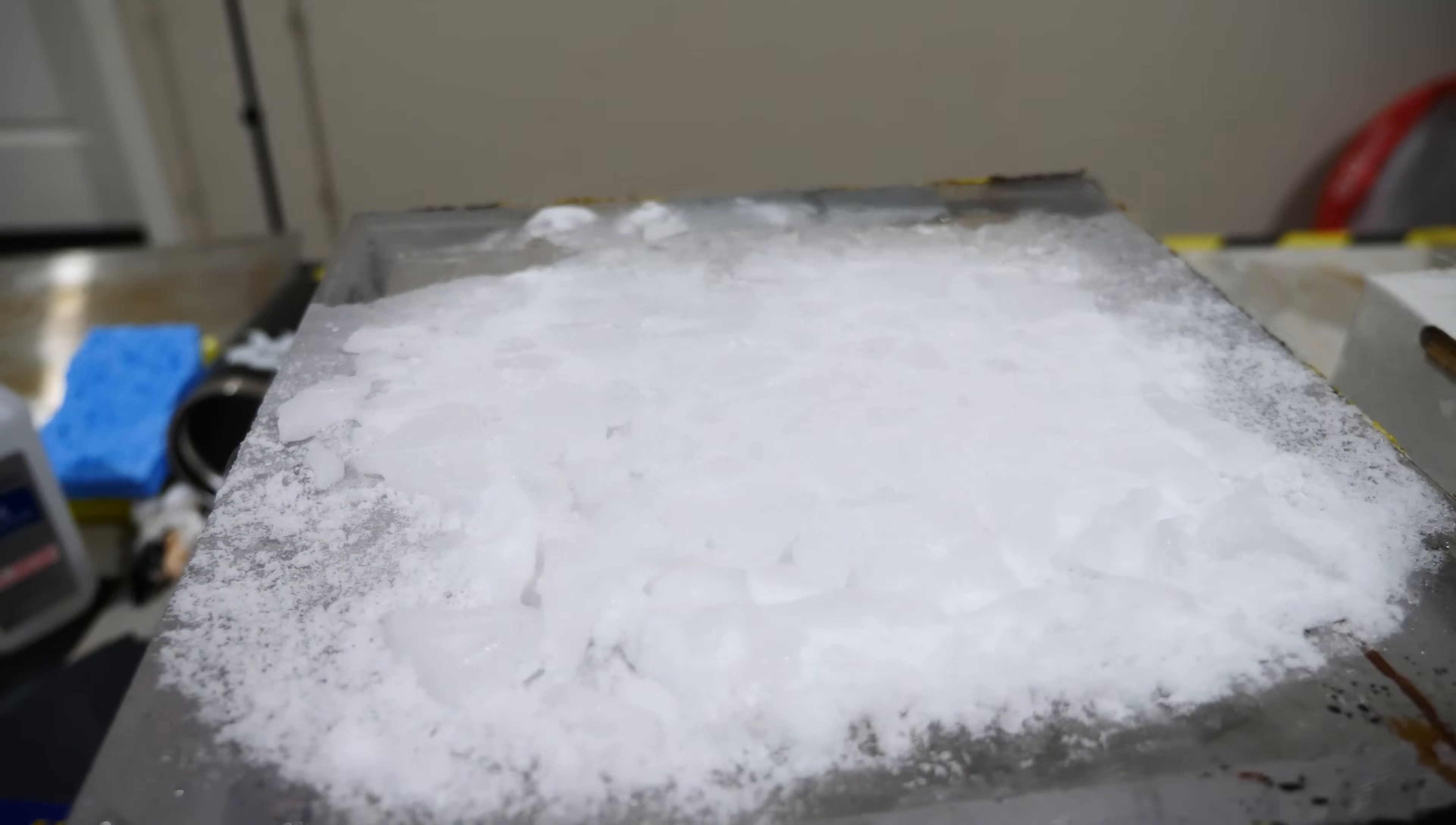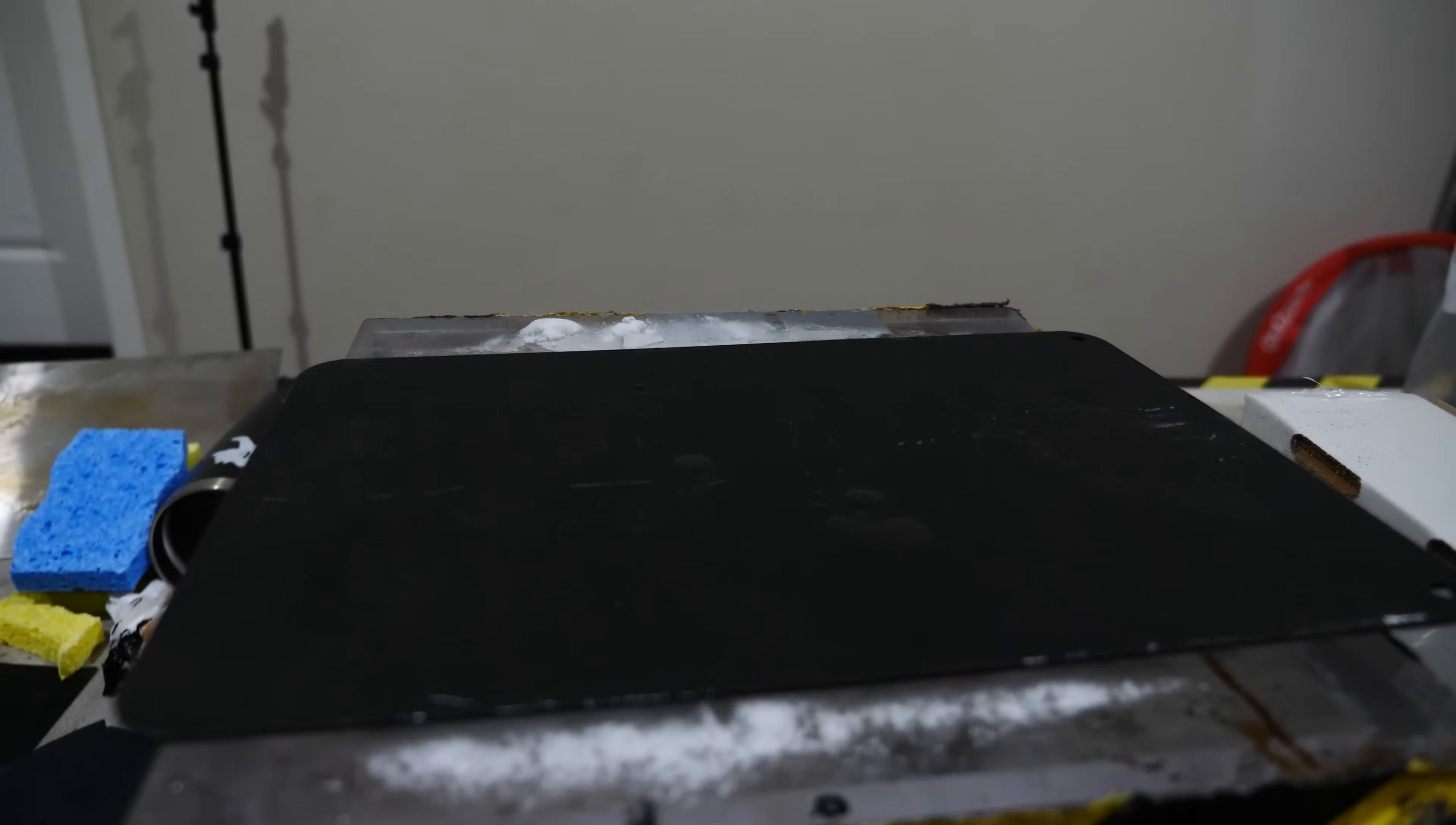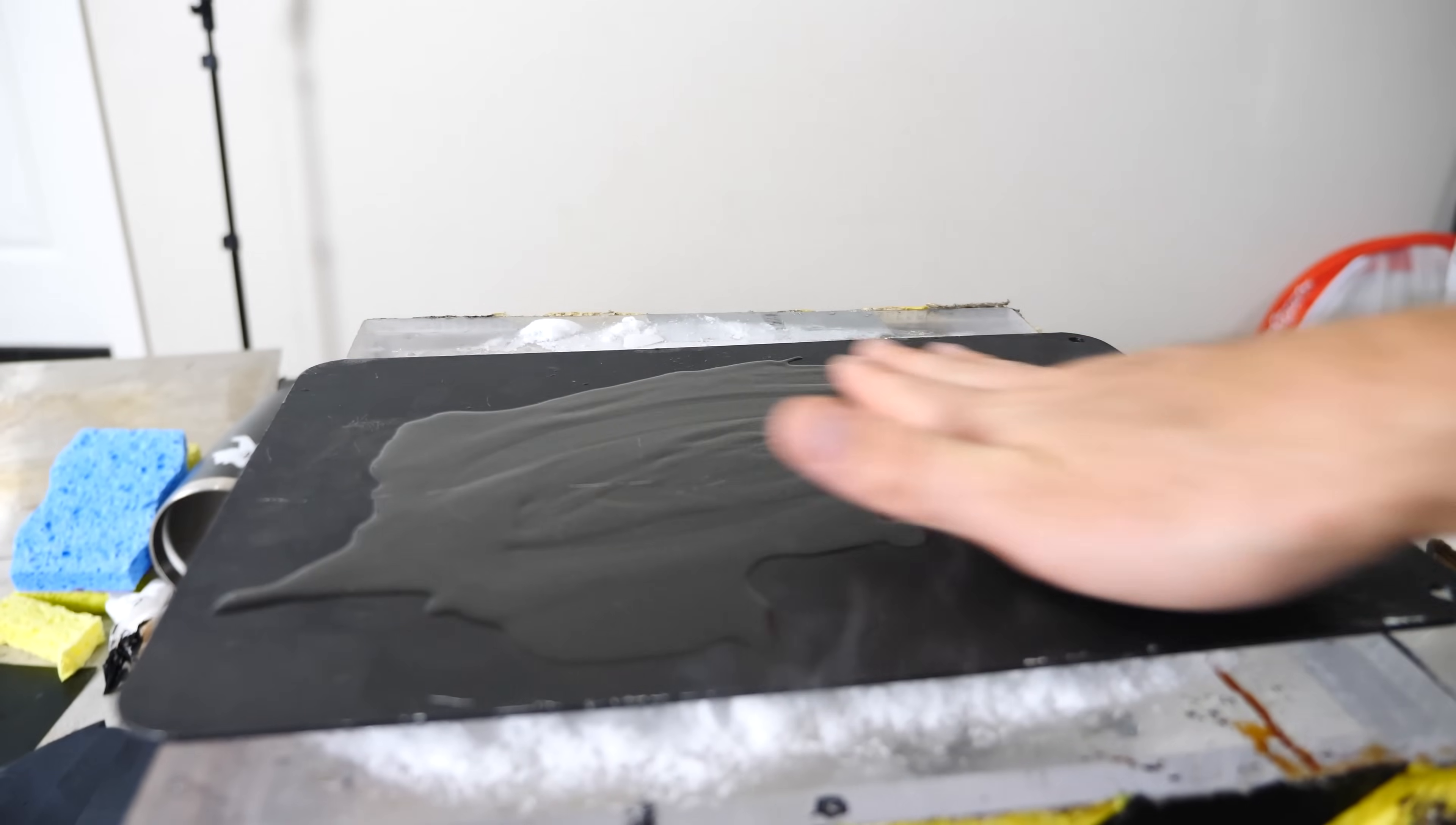I just spread some dry ice out here and then I put this plate of aluminum on top and this is black aluminum so I can see it a little bit better. All you really need to do this is some isopropyl alcohol. Now the higher percentage you can get it the better it'll work. So I'm using 99% isopropyl alcohol here. Then I just pour the alcohol on the aluminum. Spread it all around.